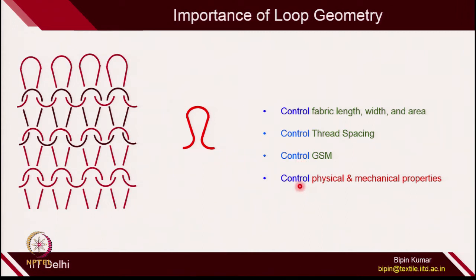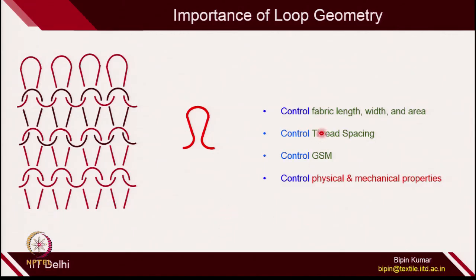We can also see how loops control physical and mechanical properties. If you make bigger loops, the fabric will be more porous and more permeable. If you make bigger loops, the fabric will be more flexible and have low modulus. This is what we have already seen — how the fabric can be related with loop length. If there is a model available through which we use just one parameter, which is loop length, we can find out most of these fabric properties. It will be very useful for us.